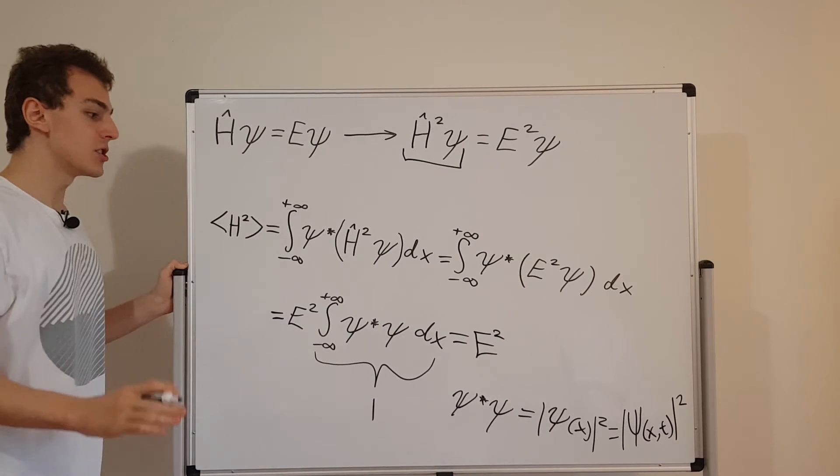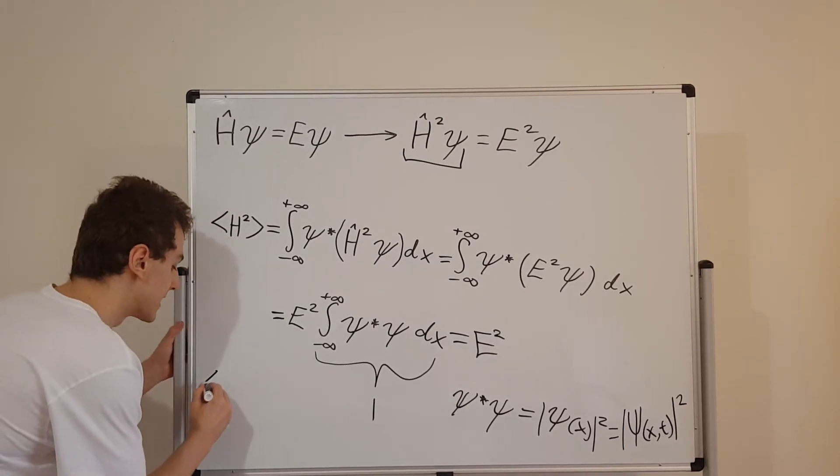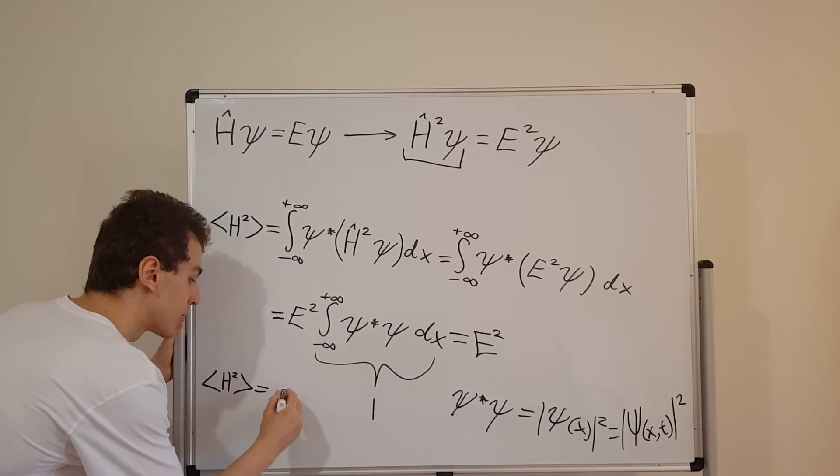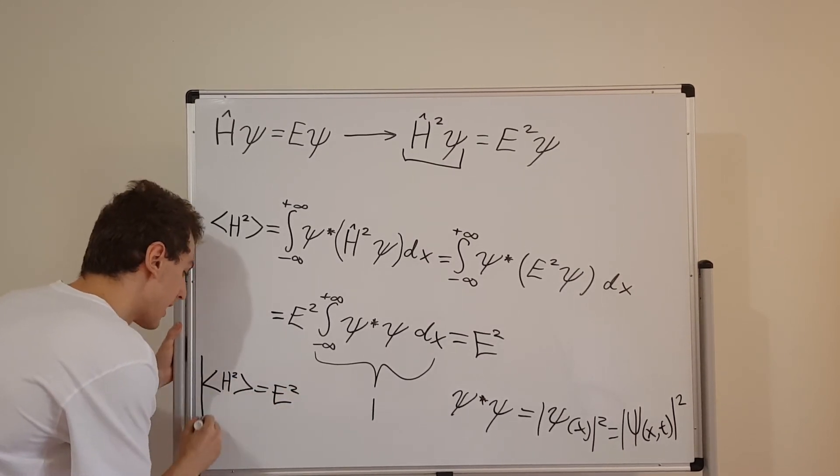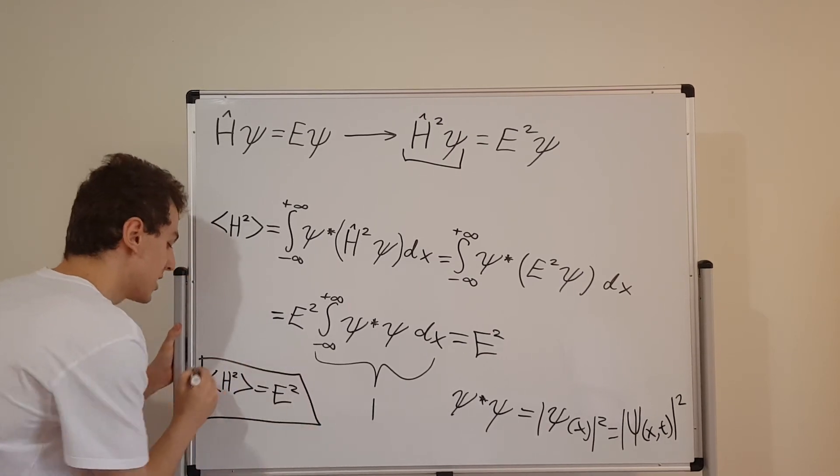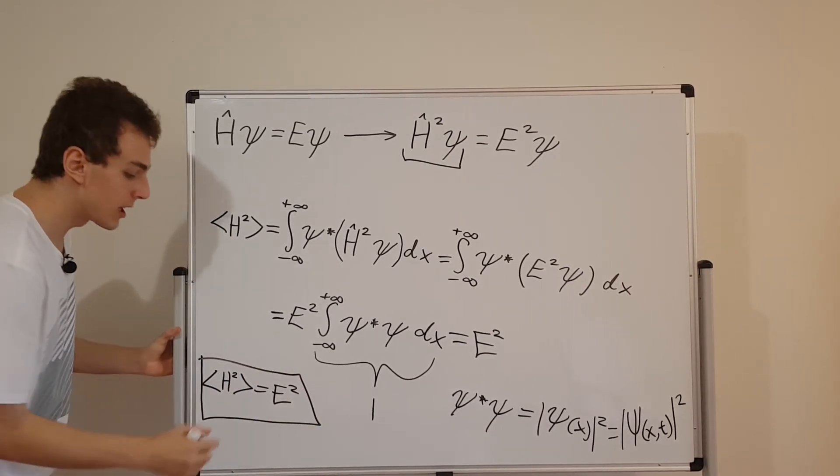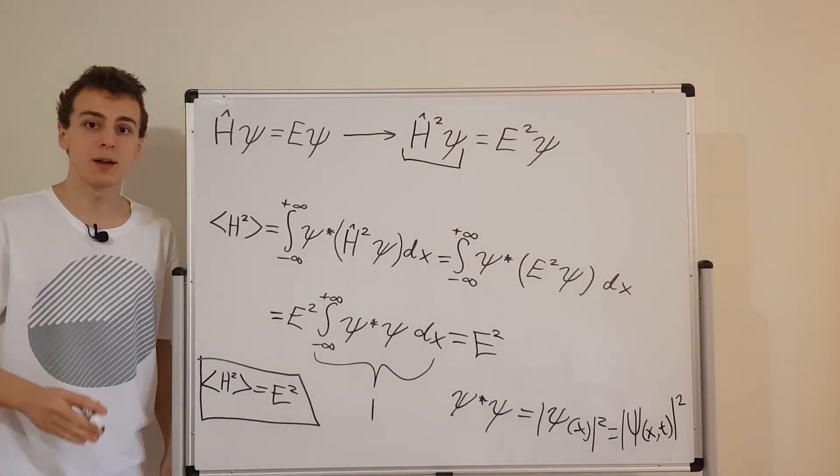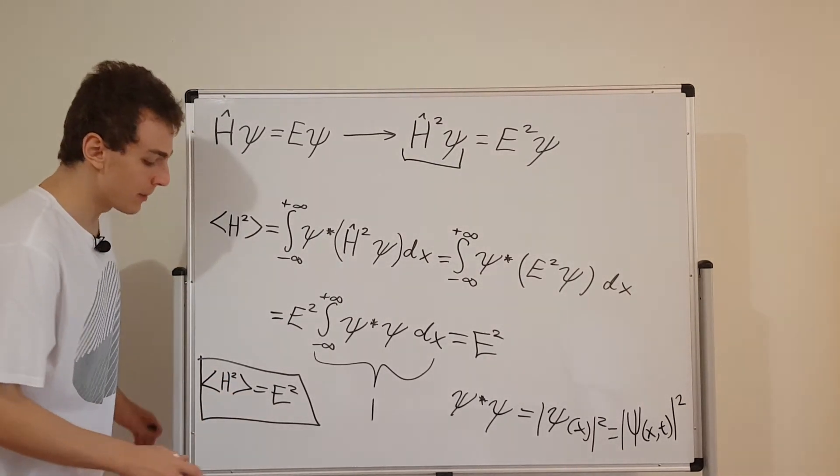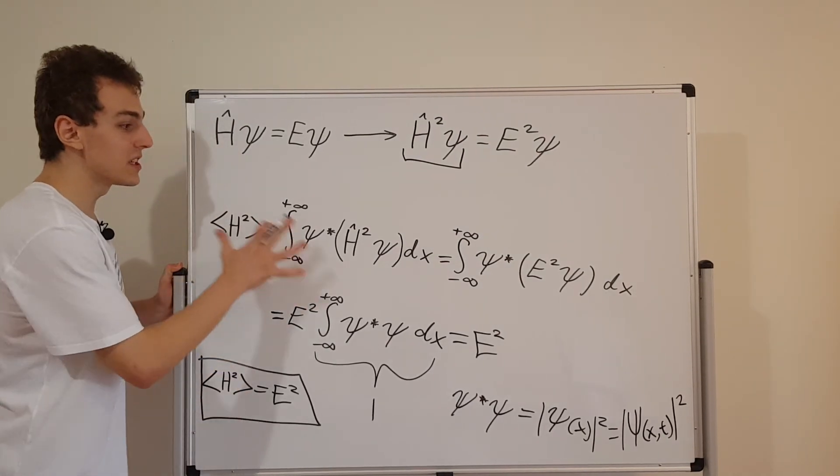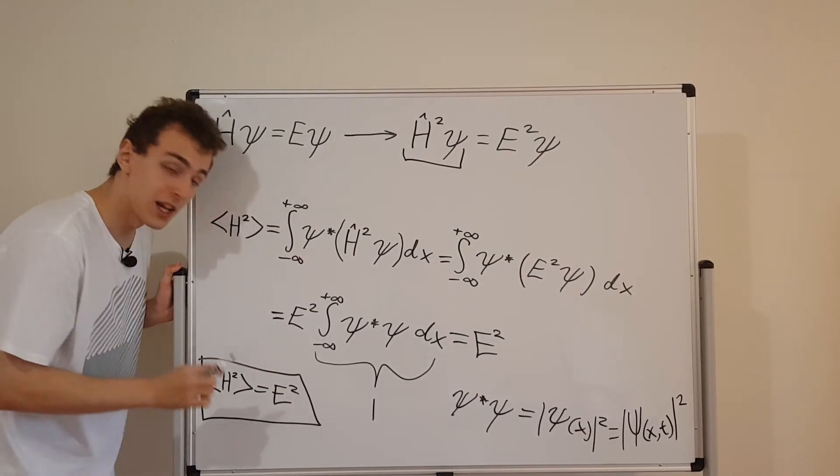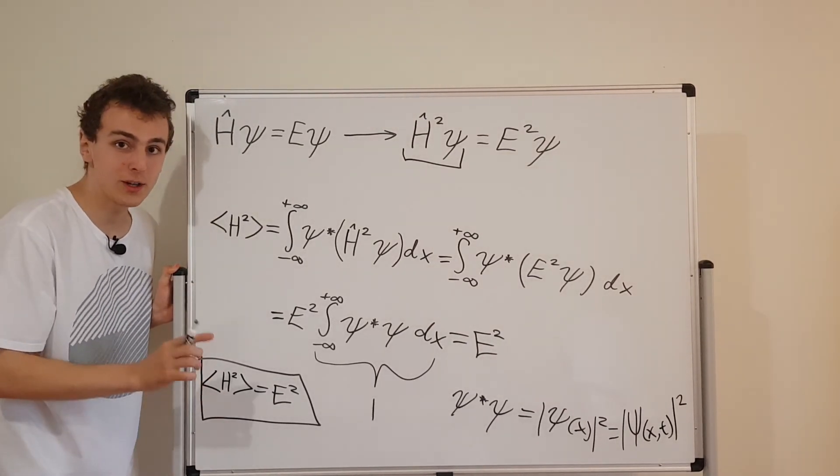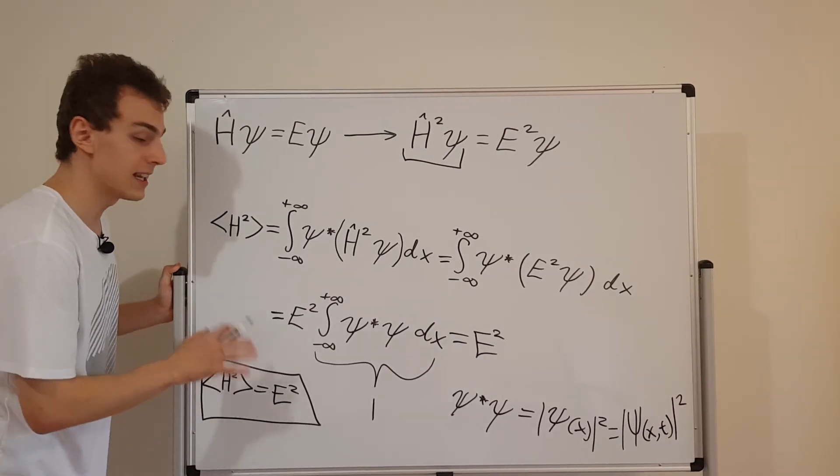So the takeaway message for this video is that the square of the Hamiltonian, its expectation value is equal to E squared. H squared, the expectation value of that is E squared. And we're going to be using this useful fact in the next video when we talk about the variance of the Hamiltonian operator. So make sure you watch that next video because all of this useful work has actually been just for that video, because that video is going to show us what the variance is. The variance is a very important quantity in quantum mechanics.